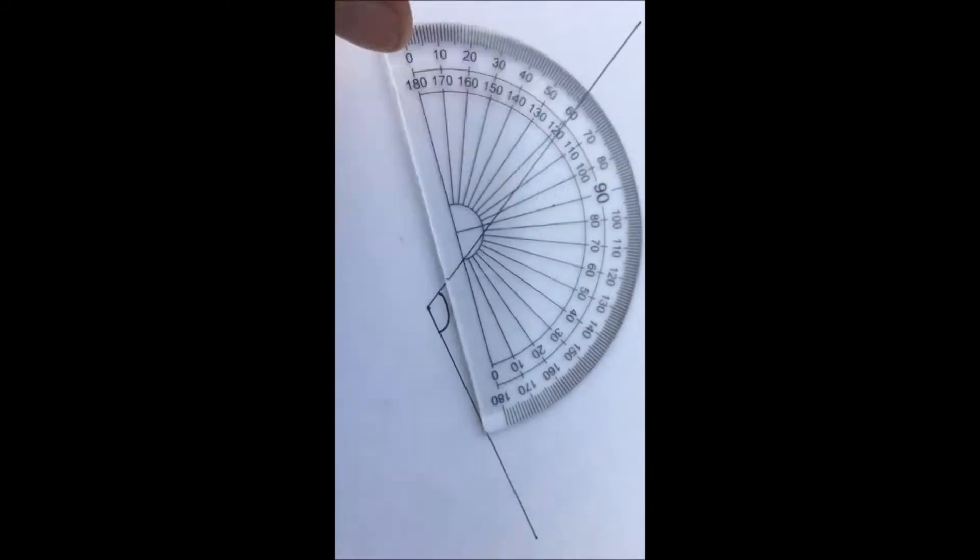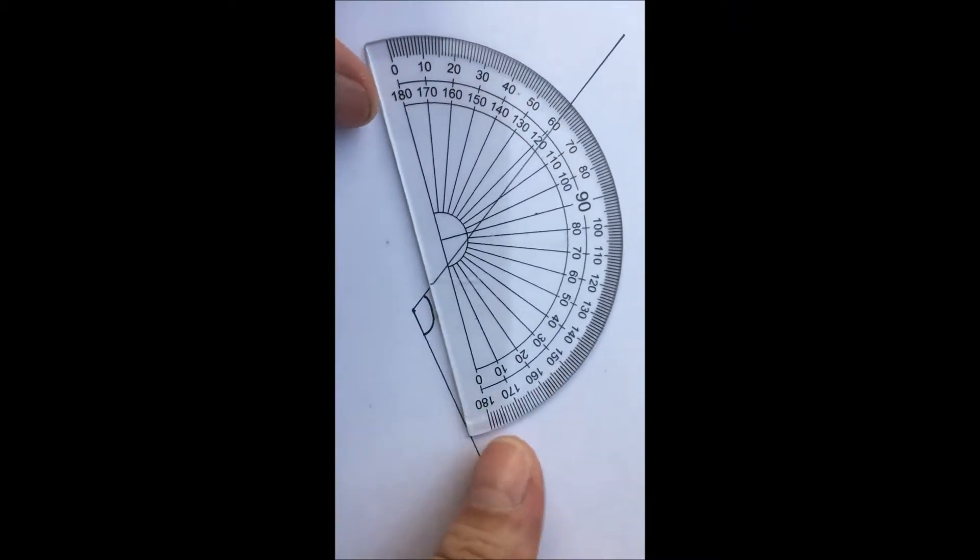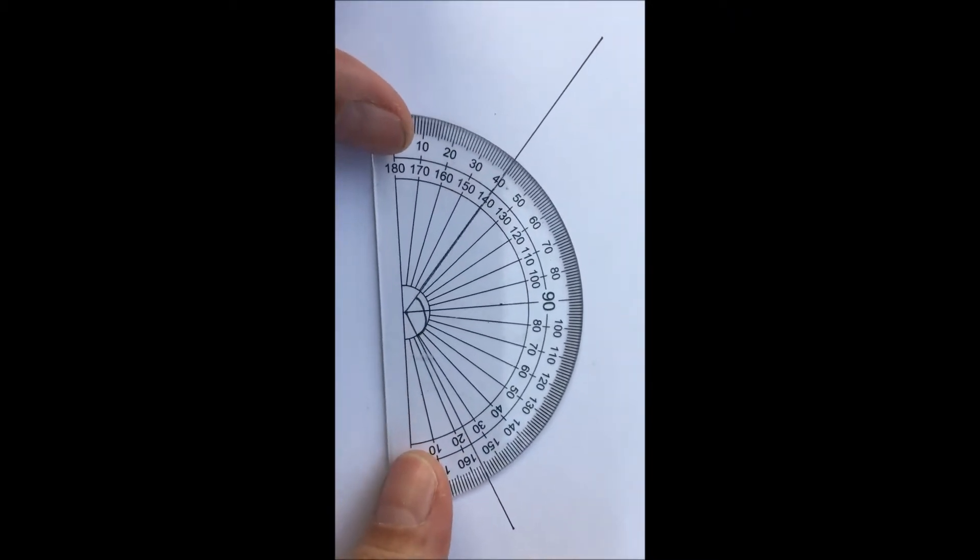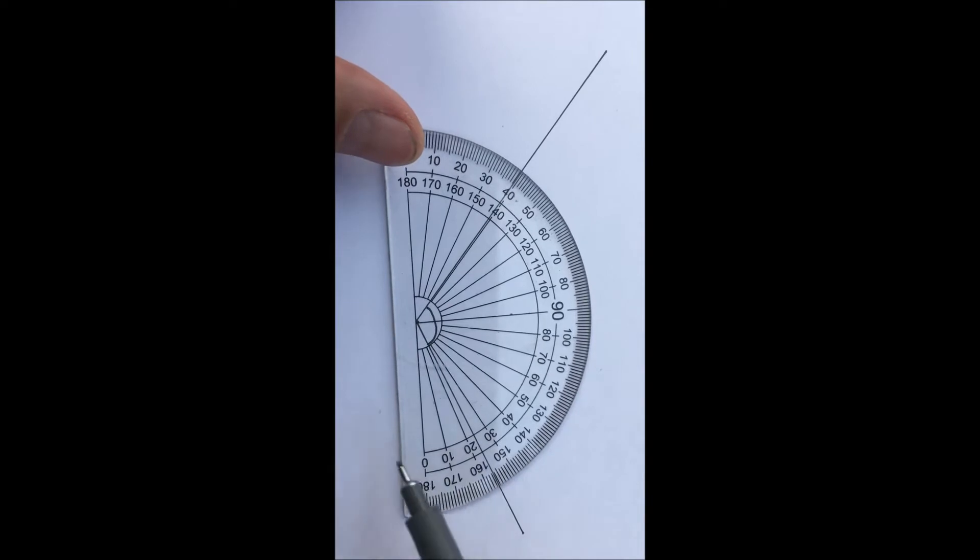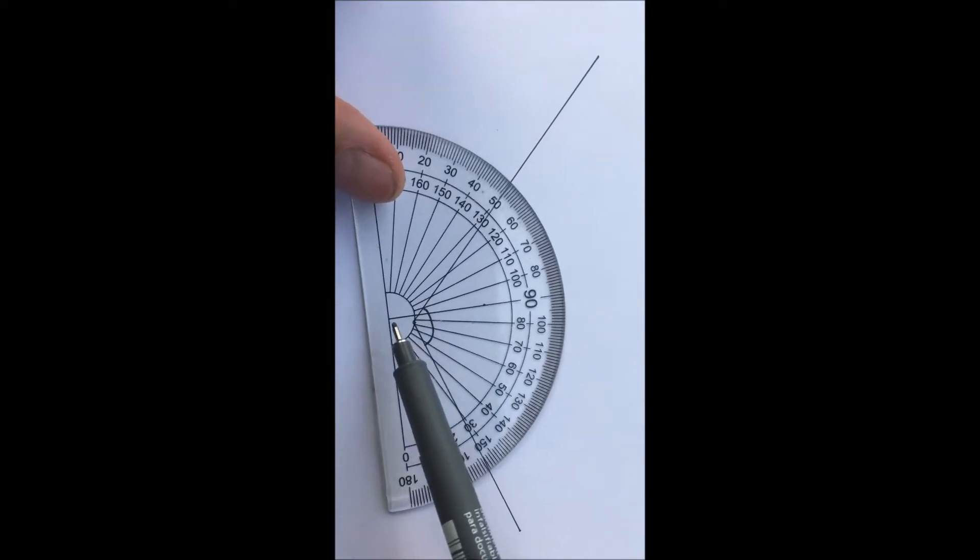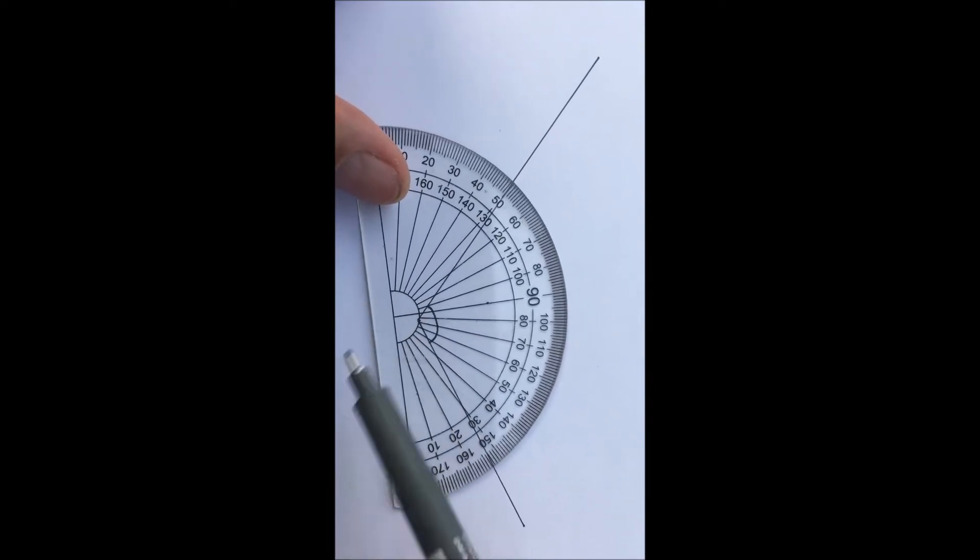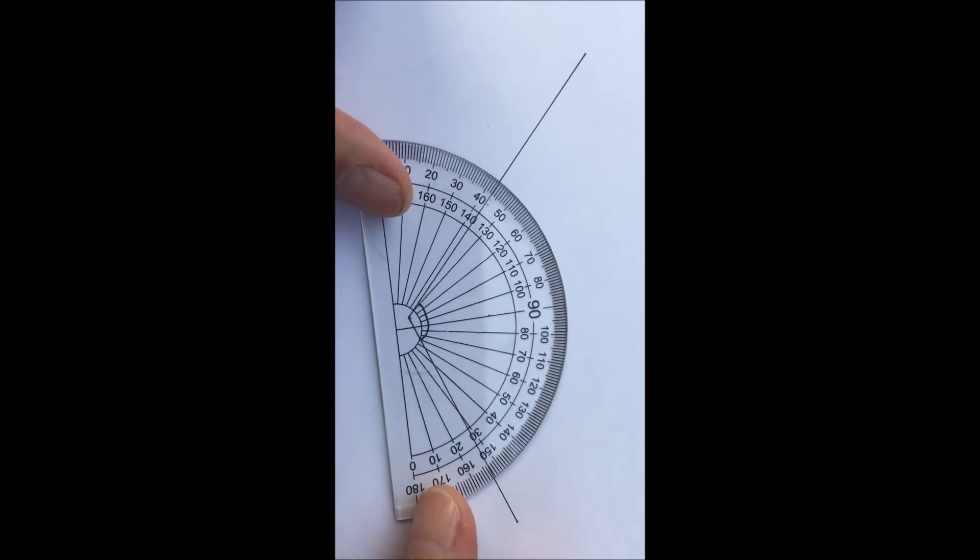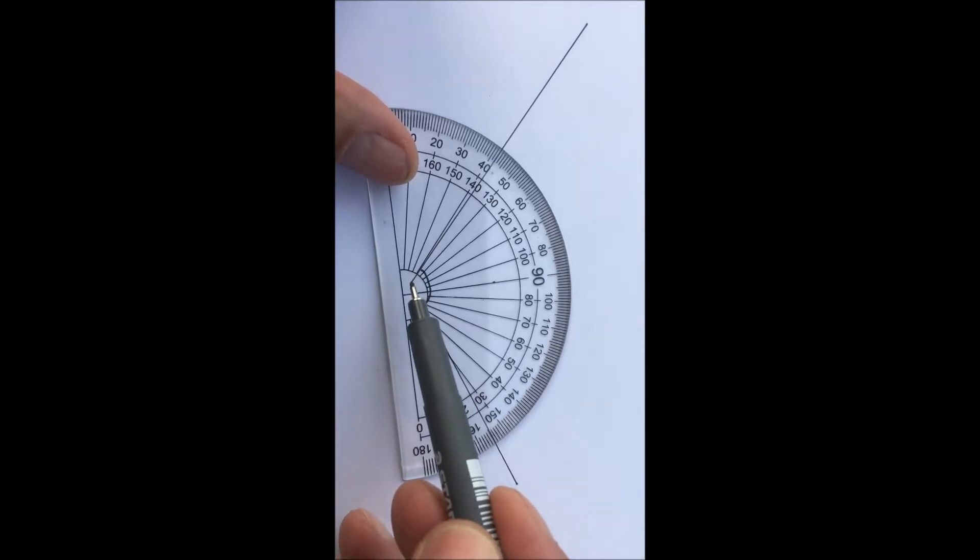We're going to measure an angle using our protractors. One of the key things is you have to make sure that this part of your protractor, right here, that cross, is smack bang on the point of the angle.